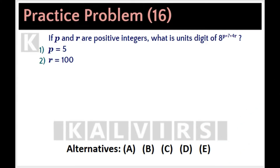If P and R are positive integers, what is the unit digit of 8 to the P plus 7 plus 4 times R? The question stem states that P and R are positive integers and they want to know the unit digit of this power. So, first of all, is there a way to find the unit digits of the powers of 8?